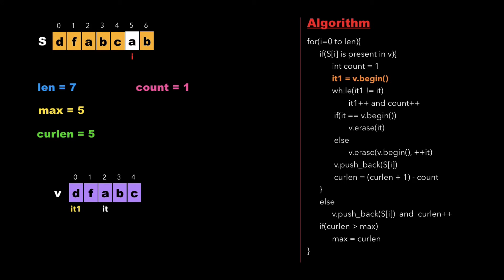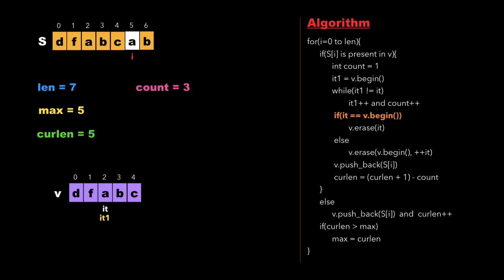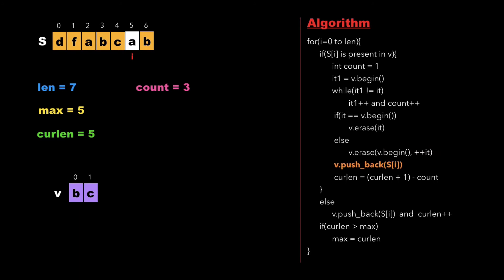We check whether both iterators are equal. If not, we keep incrementing it1 and count. Since it1 is not equal to it, we increment it1 and count, continuing until it equals it1. We then exit the while loop and check whether it equals the beginning of the vector. Since it is not equal to the beginning, we move to the else part and erase characters from the beginning of the vector up to the character pointed to by it.